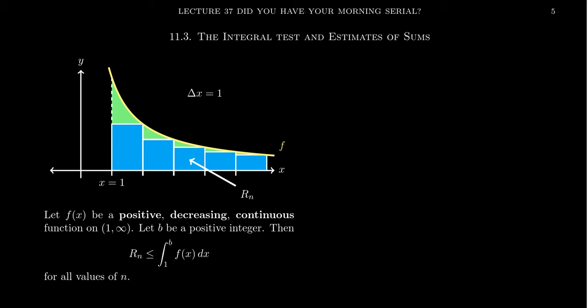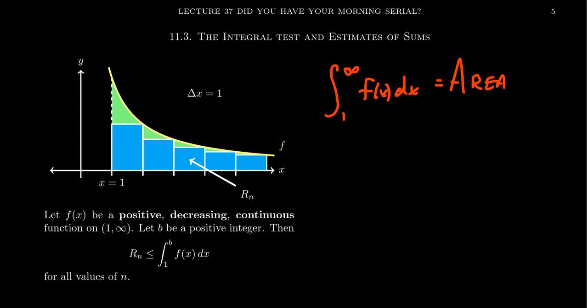If we were interested in calculating the area under the curve — taking the integral from 1 to infinity of f(x) dx — this would equal the area under the curve as you go from 1 to infinity. Now, if we wanted to approximate the area under the curve, maybe because the function f is difficult to find its antiderivative, one way of approximating it would be to use the right-hand rule.